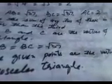Since the sum of any two sides of these is greater than the third side, therefore A, B and C are the vertices of a triangle. And since AB = BC = square root of 37, the given points are the vertices of an isosceles triangle.